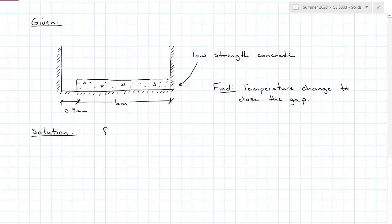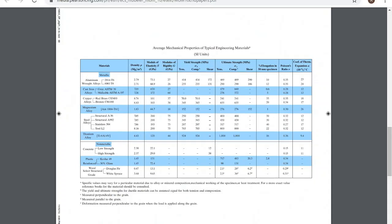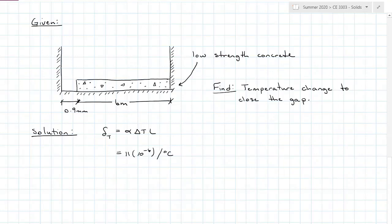Our axial deformation due to temperature equation is alpha delta T L. The first thing I need is the coefficient of thermal expansion alpha, which we can find in our book. That last column is coefficient of thermal expansion, and I have my low strength concrete value of 11 times 10 to the negative 6 per degrees Celsius.